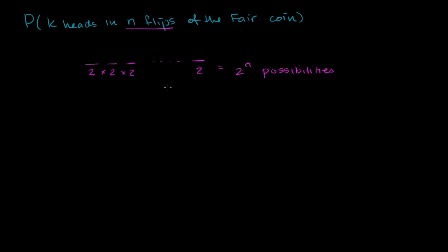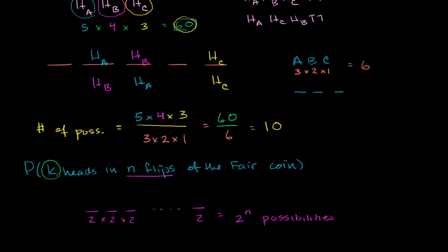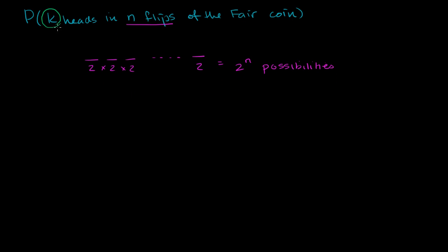Now let's think about how many of those equally likely possibilities involve k heads. Just like we did for the case of three heads, the first of those k heads could fall into n different buckets — it could be the first flip, second flip, all the way to the nth flip. Then the second of those k heads will have n minus 1 possibilities, and the third will have n minus 2 possibilities, since two of the spots are already taken up.